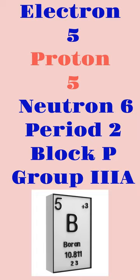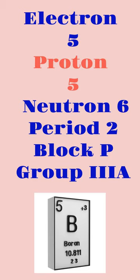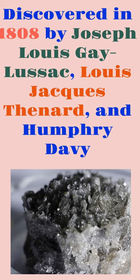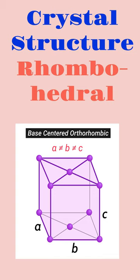Period 2, Block P, Group 3A. Discovered in 1808 by Joseph Louis Gay-Lussac, Louis-Jacques Thénard, and Humphrey Davy. Crystal structure of boron is the simple rhombohedral form.